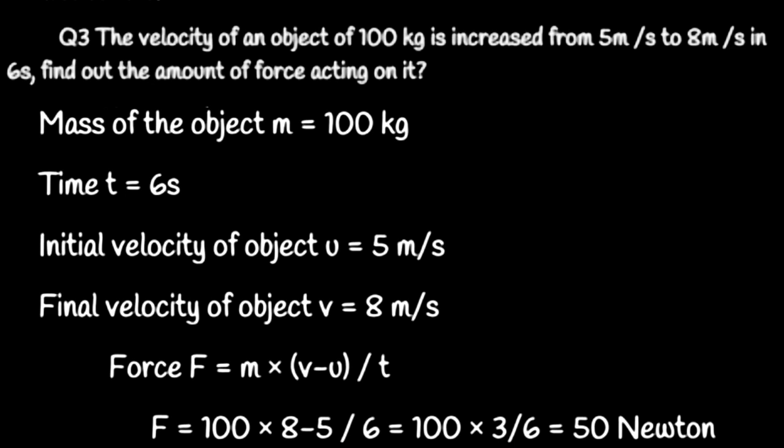The velocity of an object of mass 100 kg is increased from 5 meter per second to 8 meter per second in 6 seconds. Find out the amount of force acting on it. Mass is given 100 kg, initial velocity u is 5 meter per second, final velocity v is 8 meter per second, and time 6 seconds. So force equals m multiplied by v minus u upon t. F equals 100 into 8 minus 5 upon 6, equals 100 into 3 upon 6, equals 50 Newton. The answer is 50 Newton.